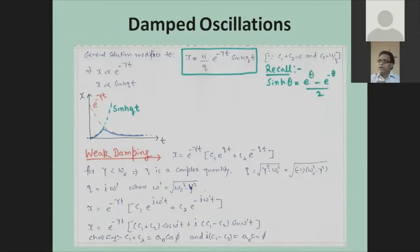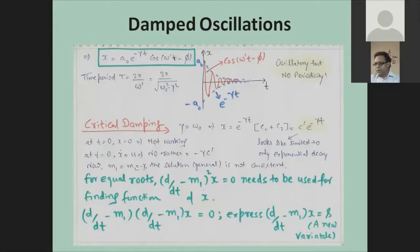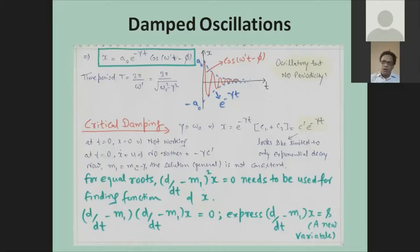Weak damping is the case where the natural oscillation is dominant over the damping caused by the medium. Whenever damping comes into the picture, the motion can remain oscillatory, but periodicity will be lost because damping will cause the oscillation to die out soon. This means the particle is not expected to recover its initial position — the amplitude decreases each cycle. It remains oscillatory in nature, but periodicity is lost.